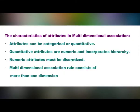Let us see the characteristics of attributes in this association. Attributes can be categorical or quantitative. Quantitative attributes are numeric and incorporate hierarchy. Numeric attributes must be discretized. One more property is that a multidimensional association rule consists of more than one dimension. For example, a person X who buys a laptop computer also buys an inkjet printer. In this way, we can have multiple dimensions in the rules.